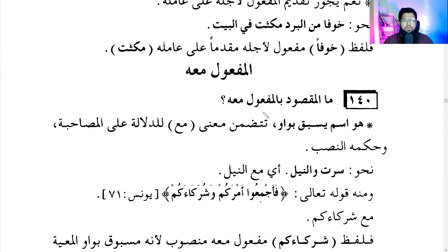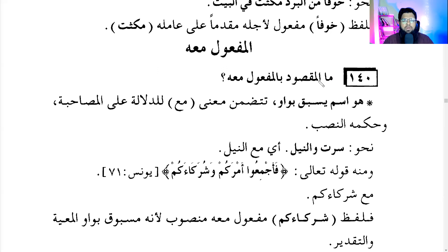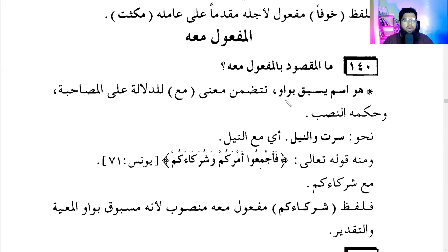Welcome to the class of 400 questions. Today we are going to do the object that shows you that something is done together. Question number 140: what is intended by maf'ul ma'ahu? It is a noun that precedes with waw and includes the meaning of ma'a, to show the meaning of musahaba — maf'ul ma'ahu shows the meaning of 'with something,' so instead of using ma'a, they use the waw.